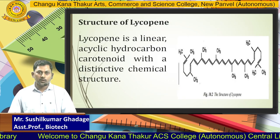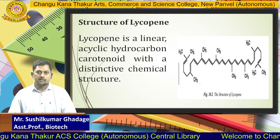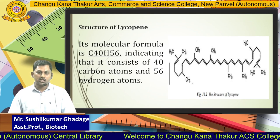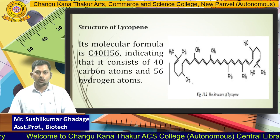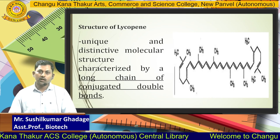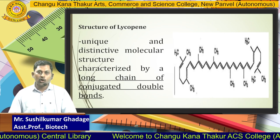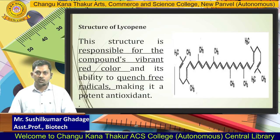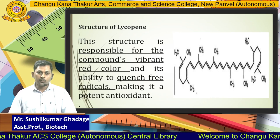The structure of lycopene is a linear acyclic hydrocarbon carotenoid with a distinctive chemical structure. Its molecular formula is C40H56, consisting of 40 carbon atoms and 56 hydrogen atoms. It is characterized by a long chain of conjugated double bonds, which is responsible for its vibrant red color and its ability to quench free radicals, making it a potent antioxidant.